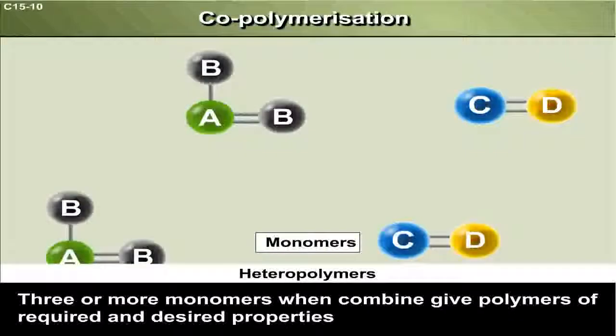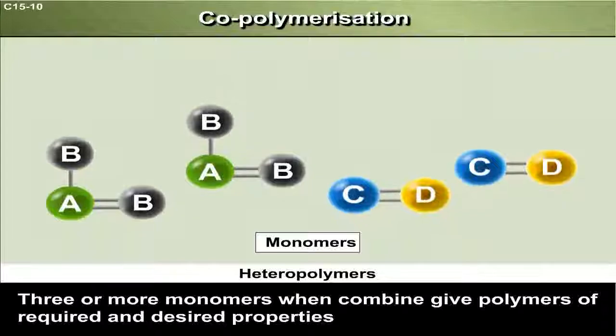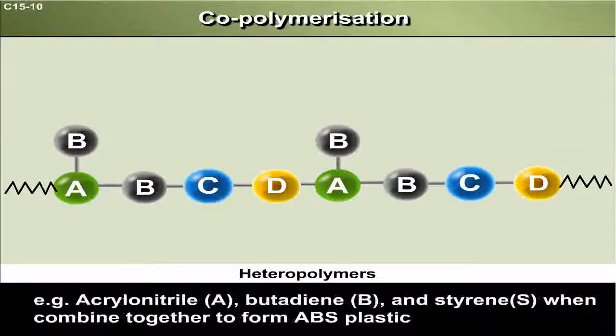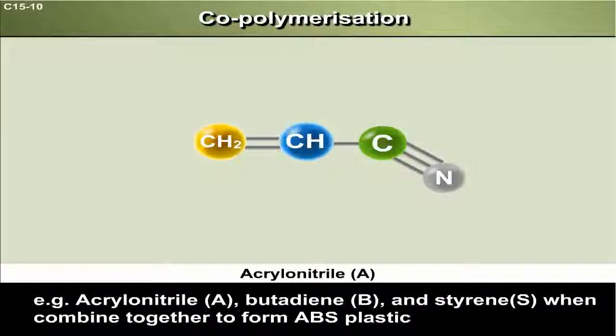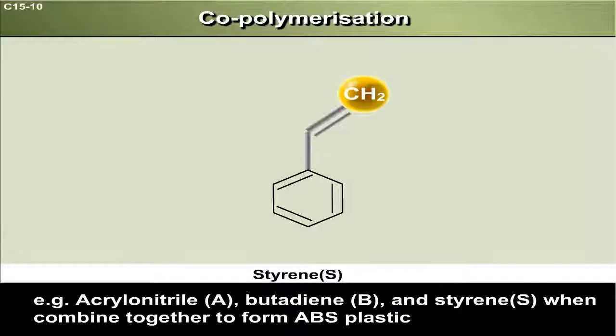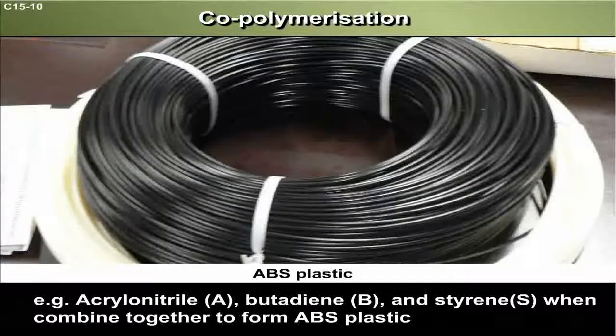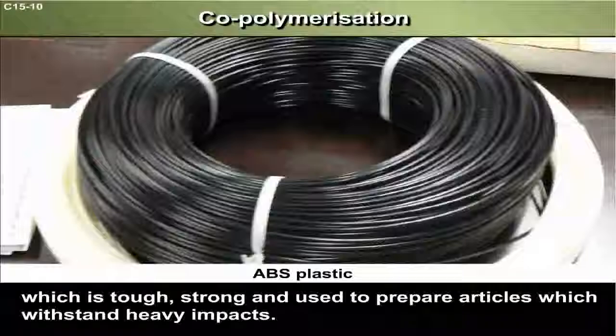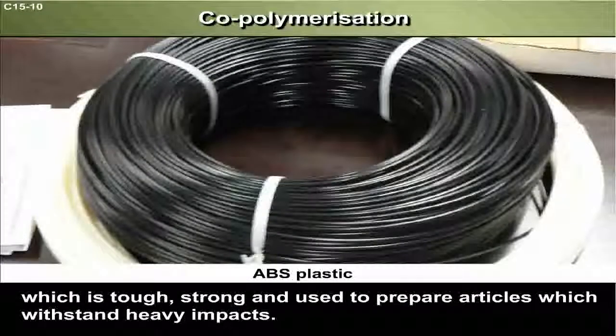Three or more monomers when combined give polymers of required and desired properties. For example, acrylonitrile (A), butadiene (B), and styrene (S) when combined together form ABS plastic, which is tough, strong, and used to prepare articles which withstand heavy impacts.